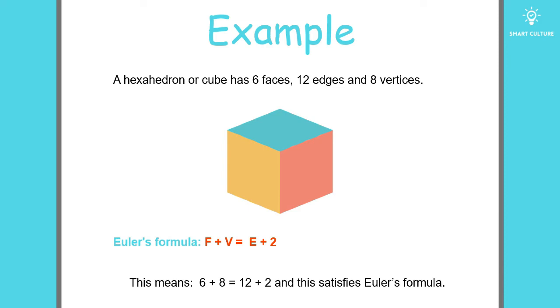Now, let's see if this is true. Six plus eight is equal to 14 and 12 plus two is equal to 14 as well. As you can see, this satisfies Euler's formula. We can conclude that Euler's formula is indeed true.